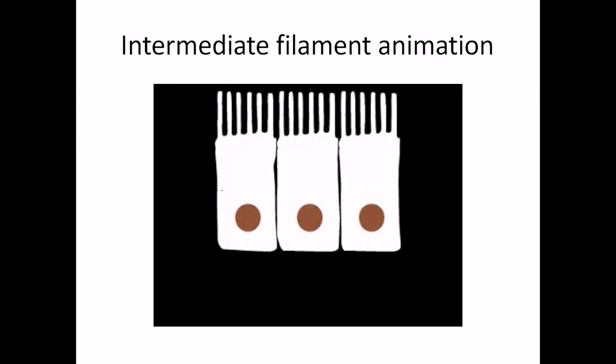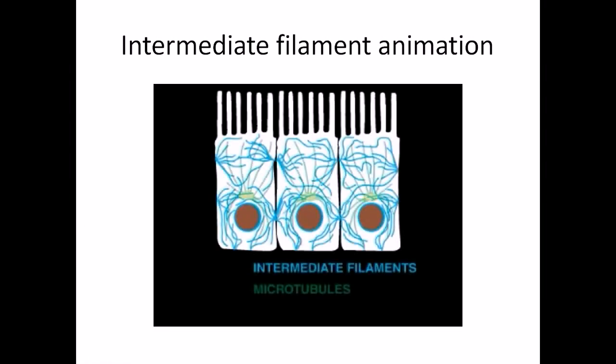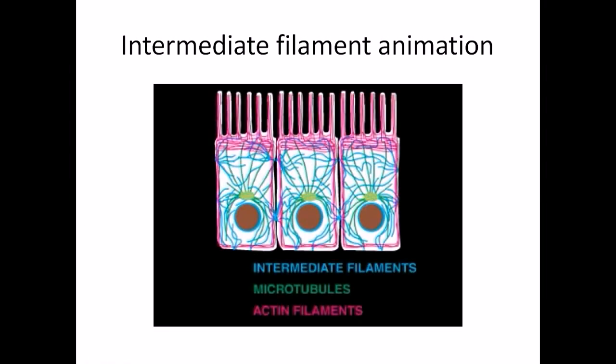Now we'll look into the animation of intermediate filament. Eukaryotic cells contain a complex network of filaments: intermediate filaments, microtubules, and actin filaments that provide the cells with strength, structure, and movement. Although all eukaryotic cells contain microtubules and actin filaments, intermediate filaments are found only in vertebrates and other soft-bodied animals.